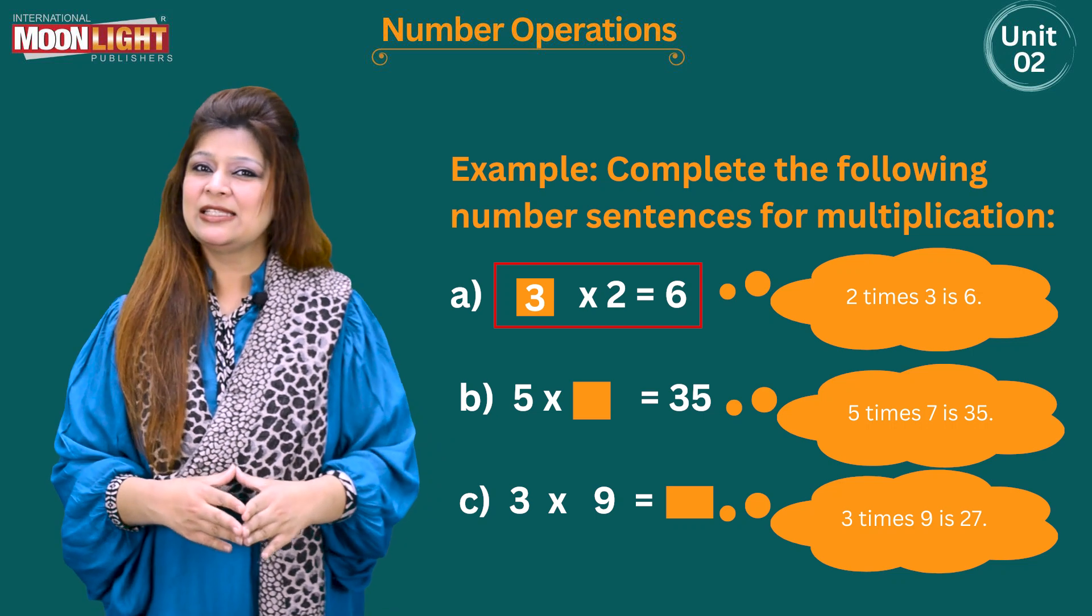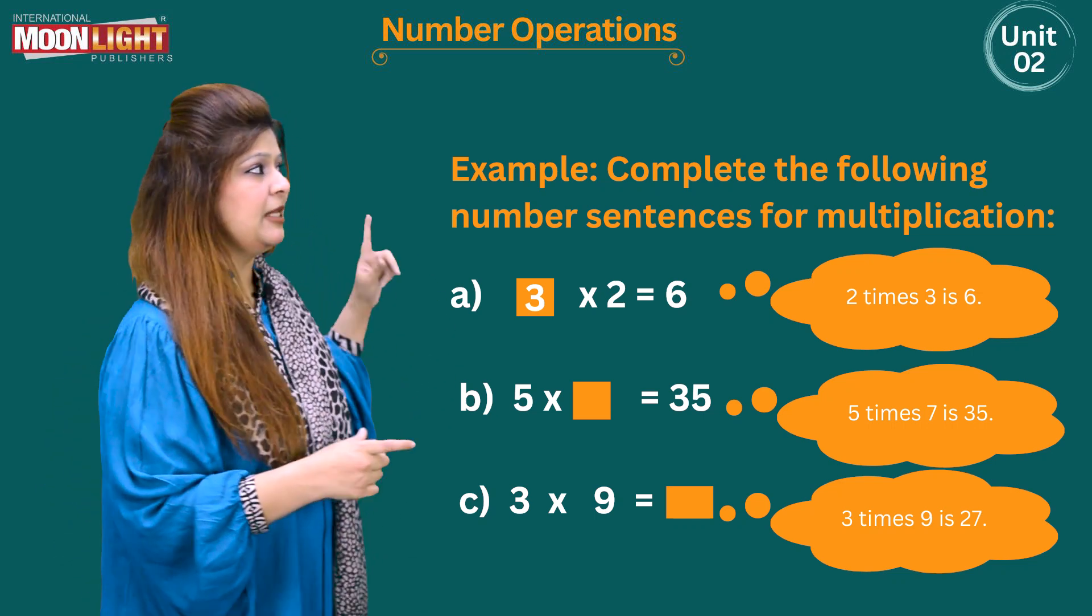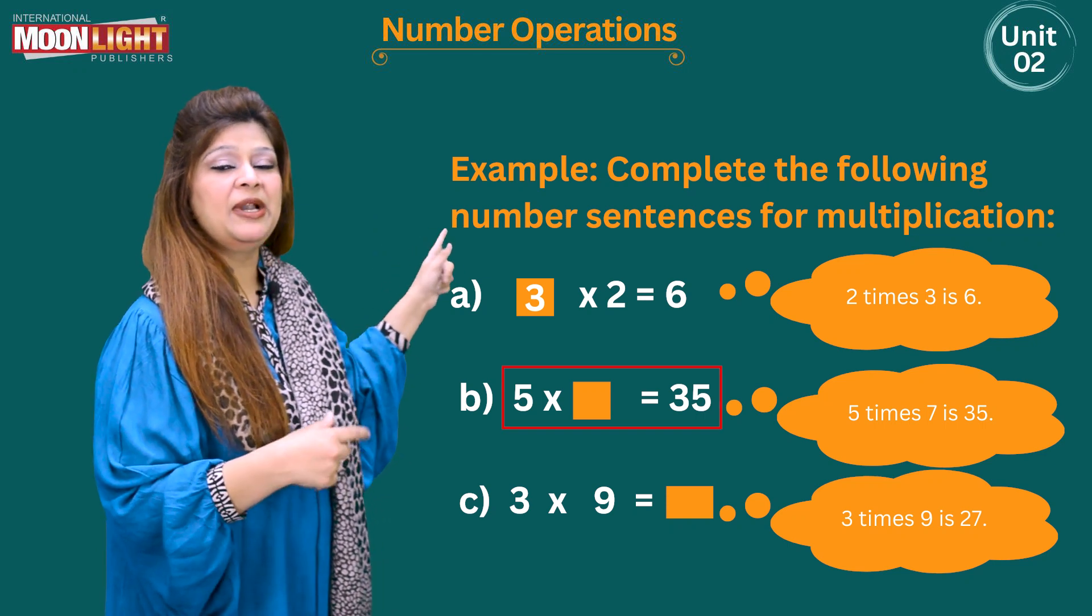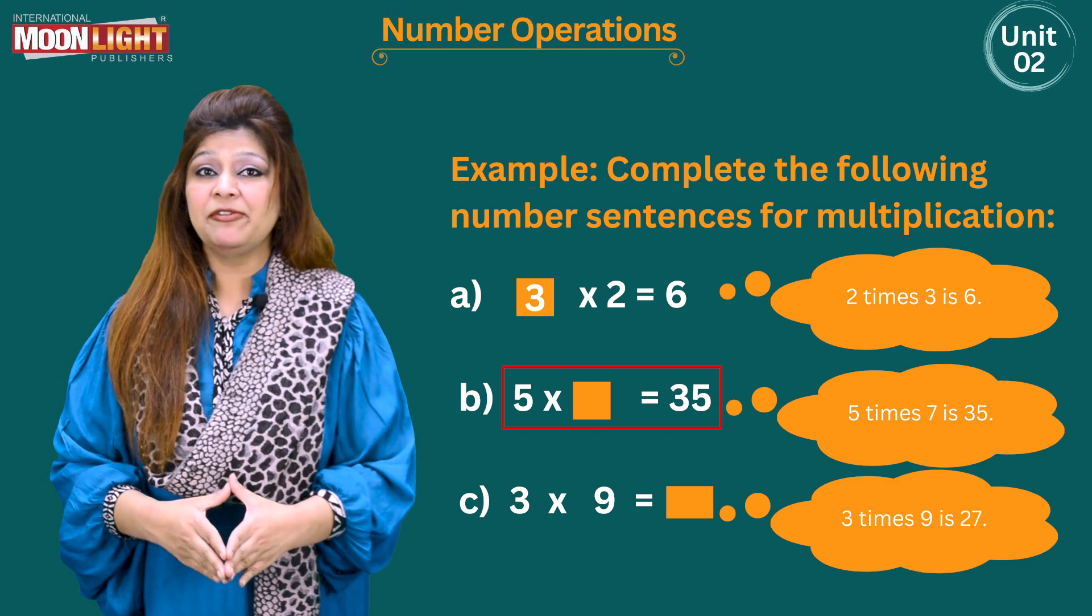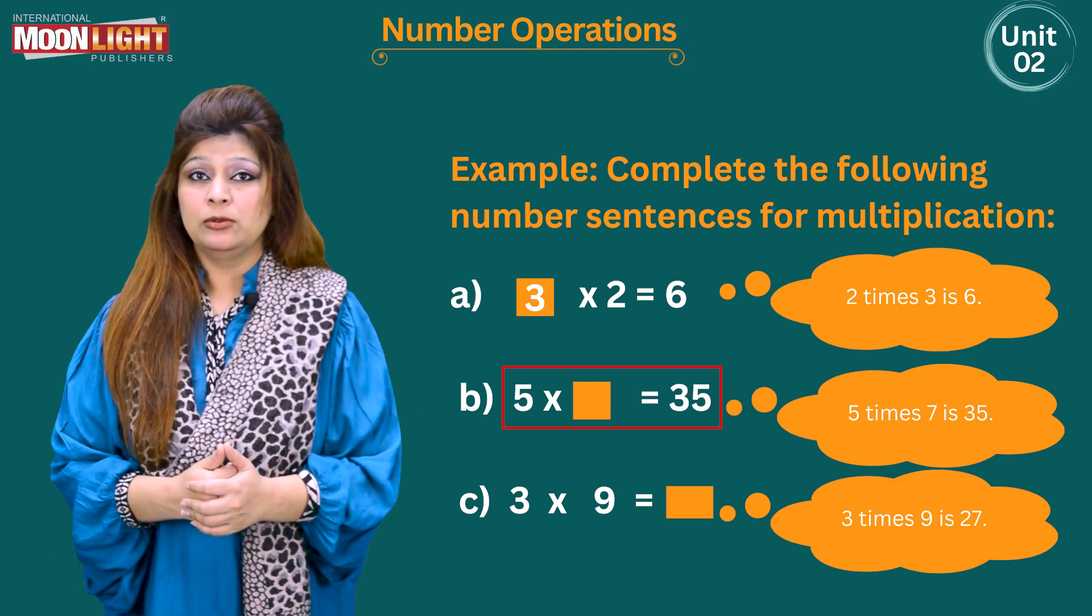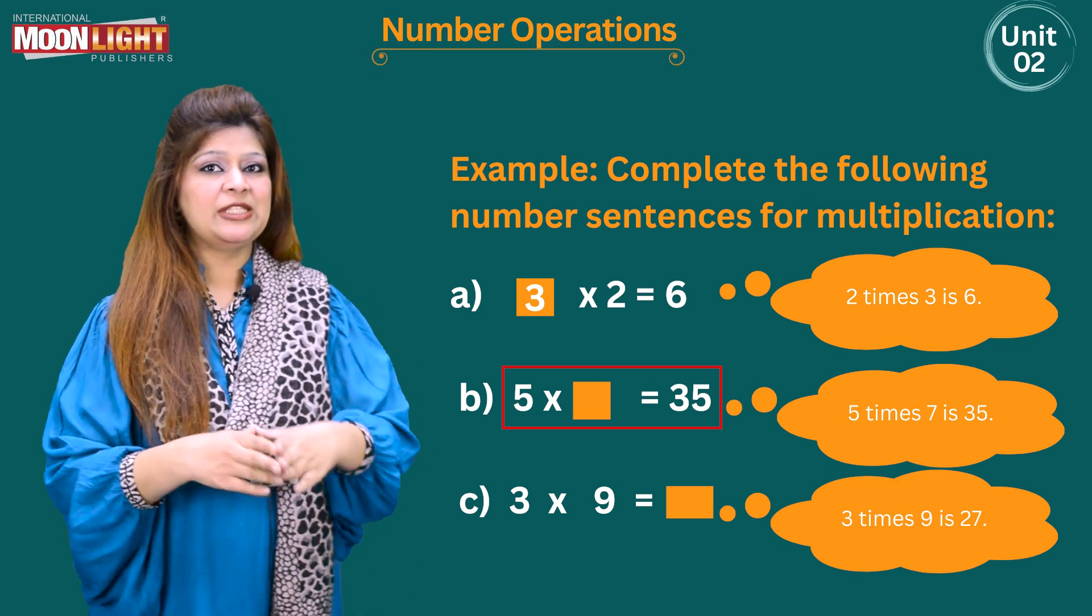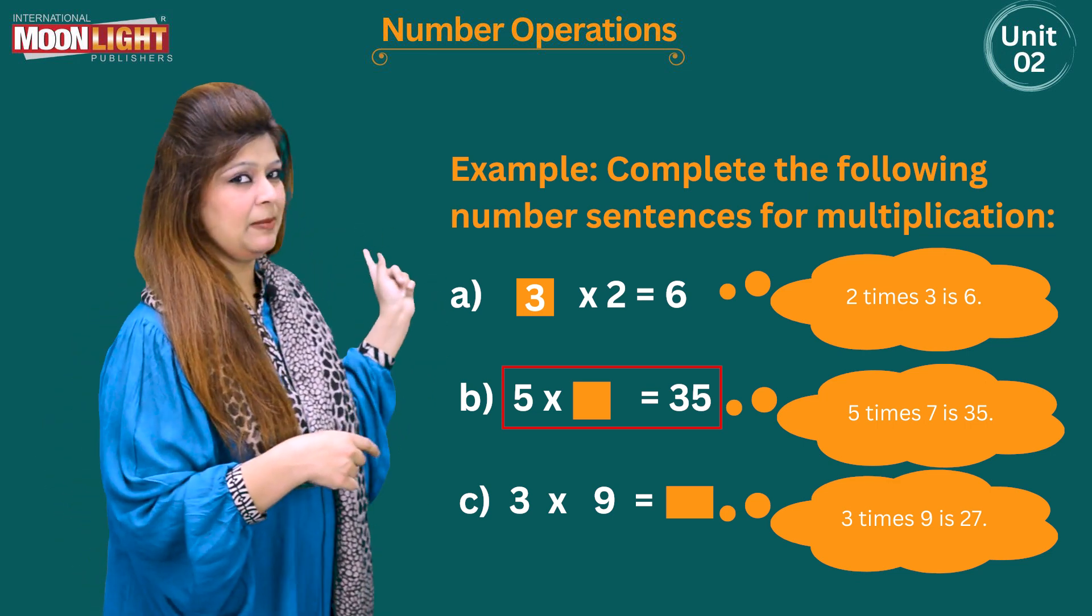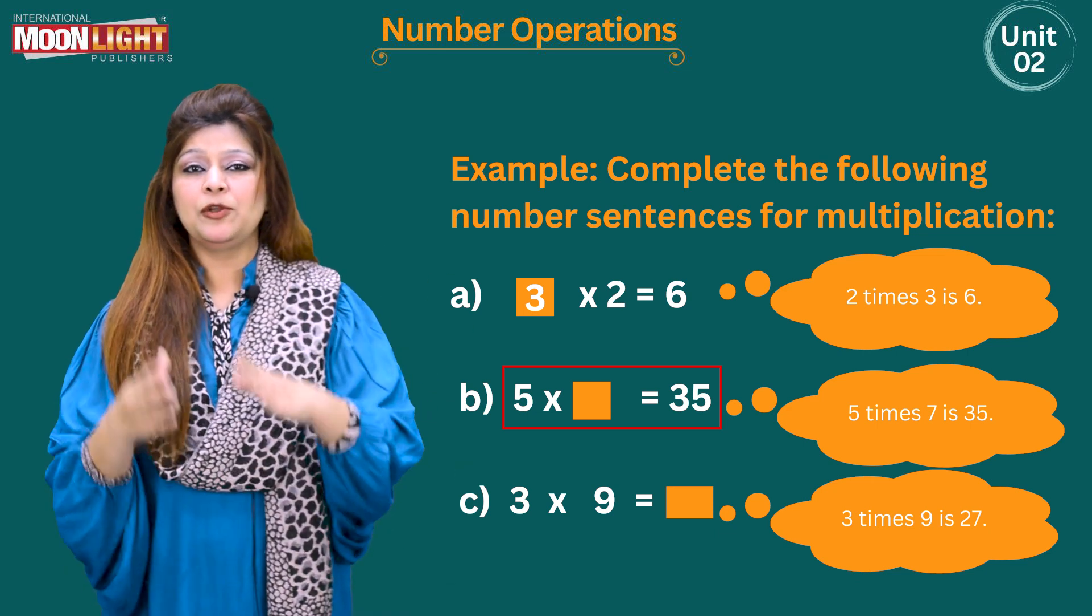Or you can say that 2 times 3 is 6. Do you remember that? Now in part b, check part b: 5, multiplication sign, and then empty box, then equals to symbol, then 35. Now what you are going to do? Yes, you are going to recall which table? Yes, this table 5, 5 times table.